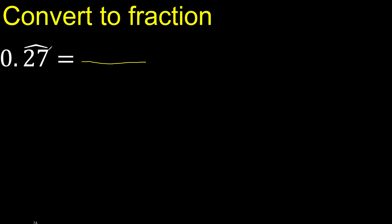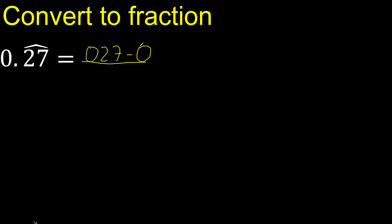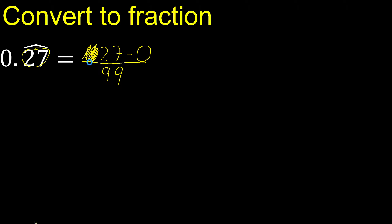First, all the number without the point, minus the number outside the symbol without point, eliminate zero on this side. After the point, there are 2 numbers with the symbol, therefore 2 nines — 2 numbers, 2 nines — subtract.